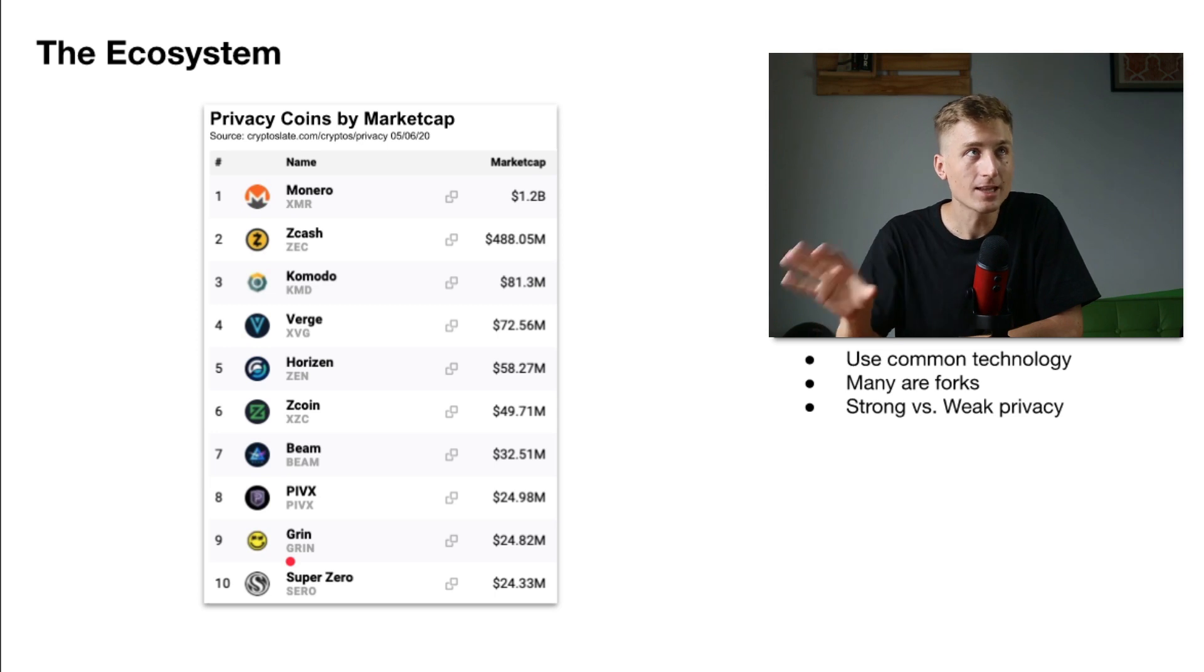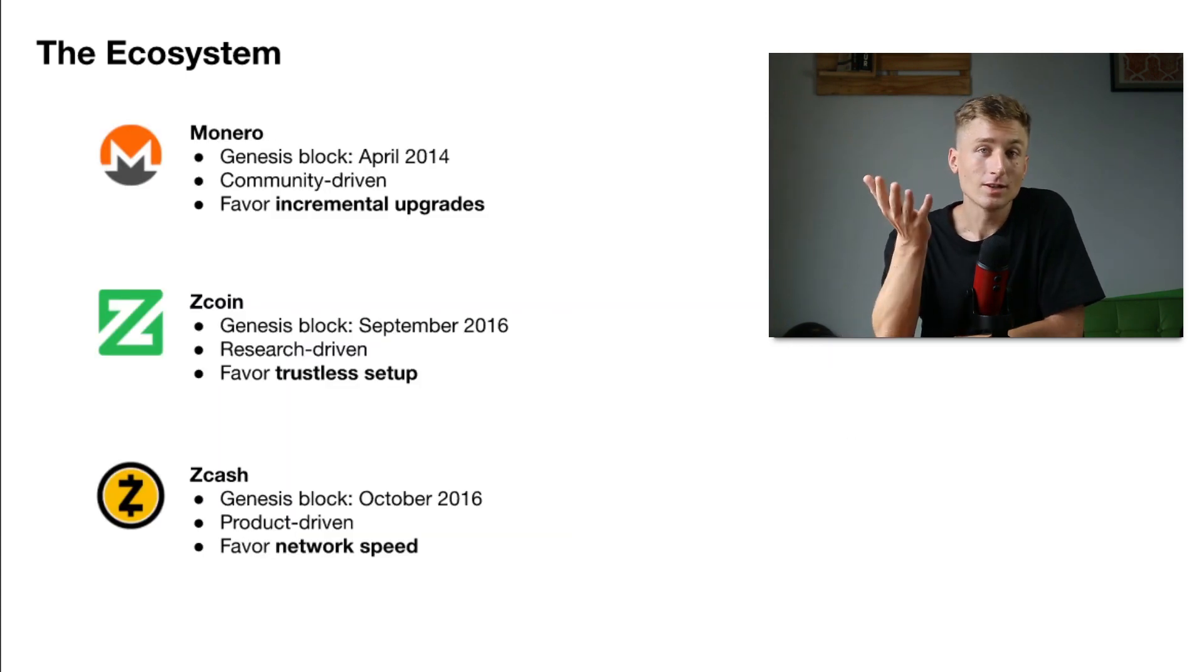And again, scalability is the focus of Mimblewimble. There is some privacy, but it is comparatively weak privacy. So when we talk about strong privacy coins, really we're talking about three things. And that is Monero, Zcash, and Zcoin. Let's take a closer look.